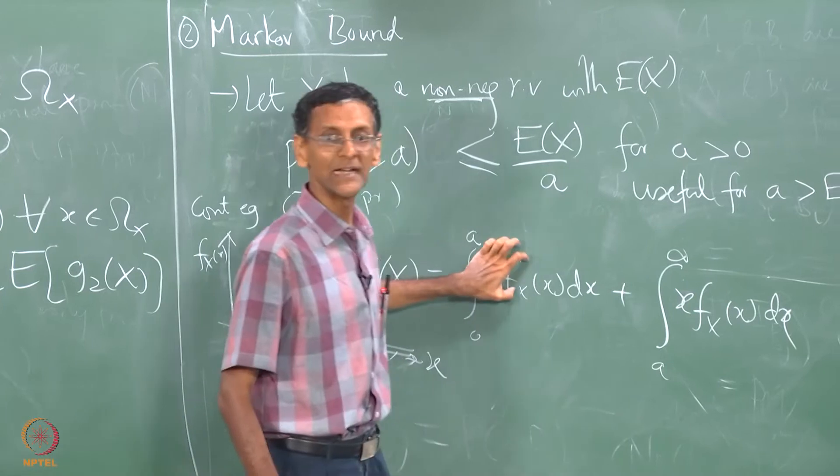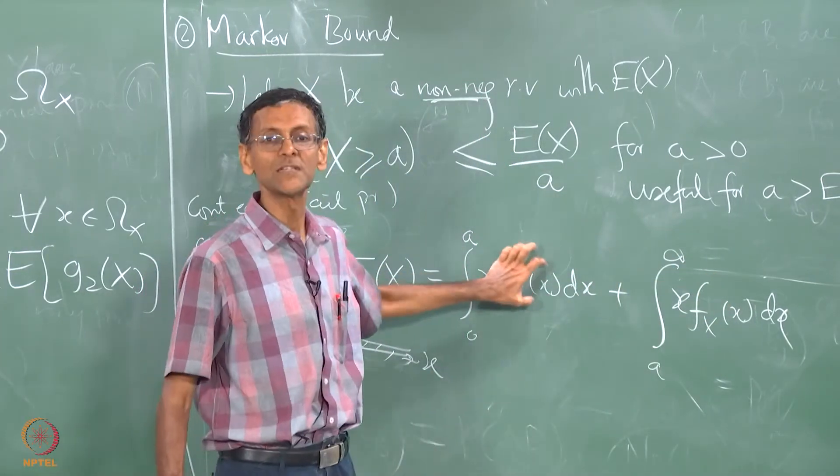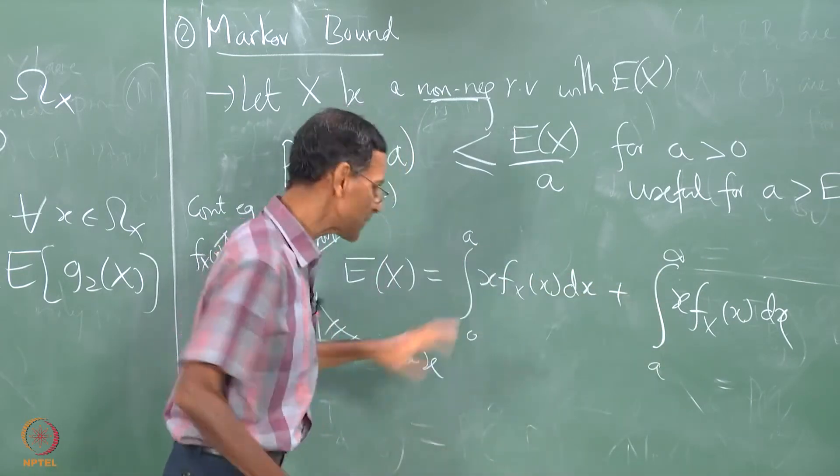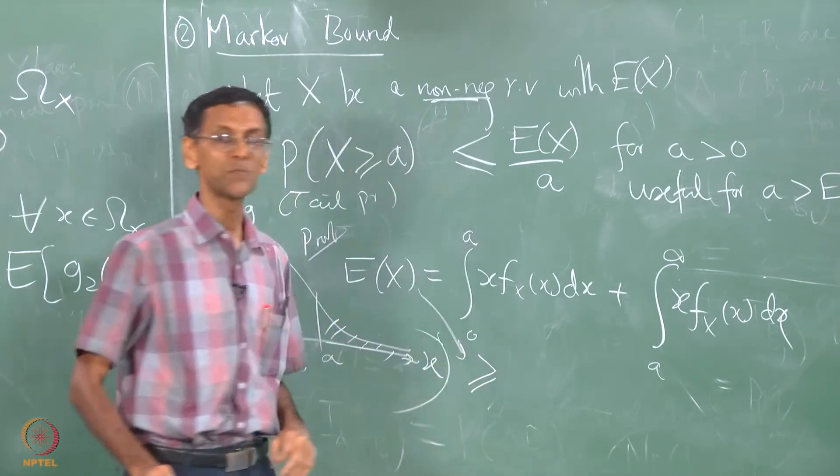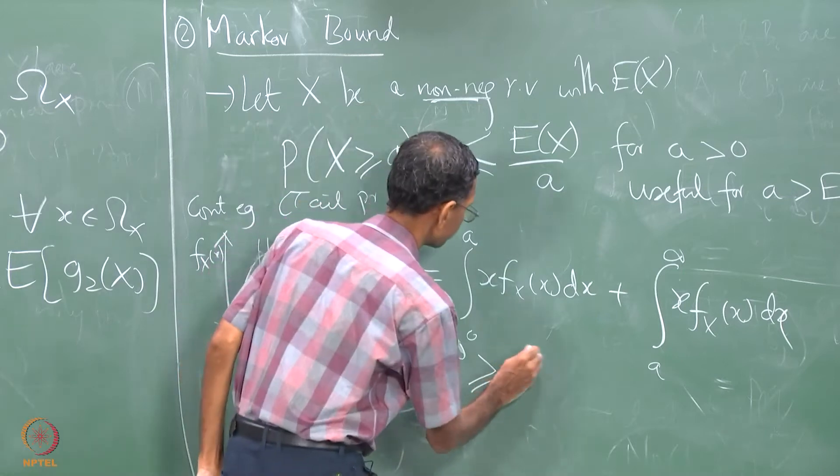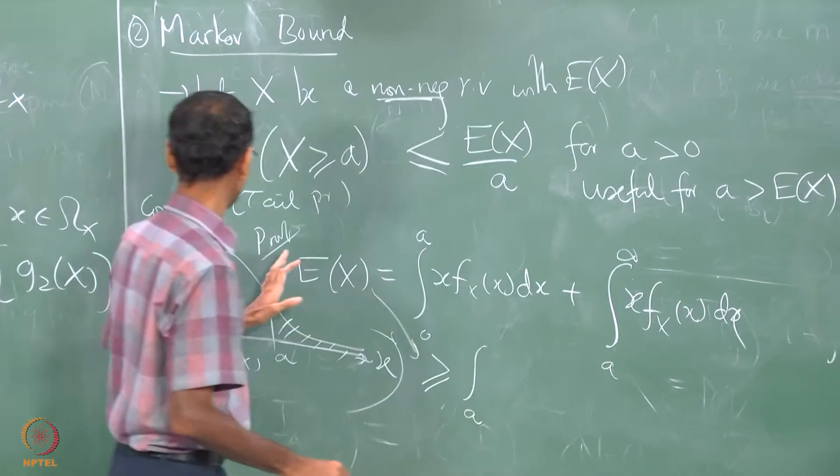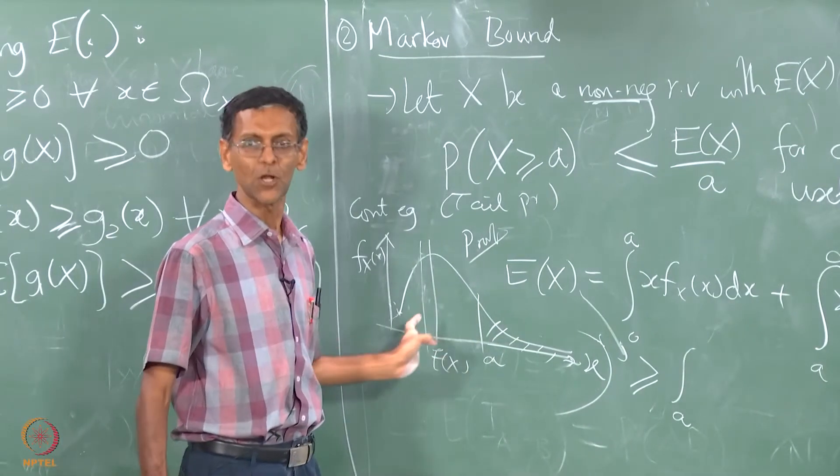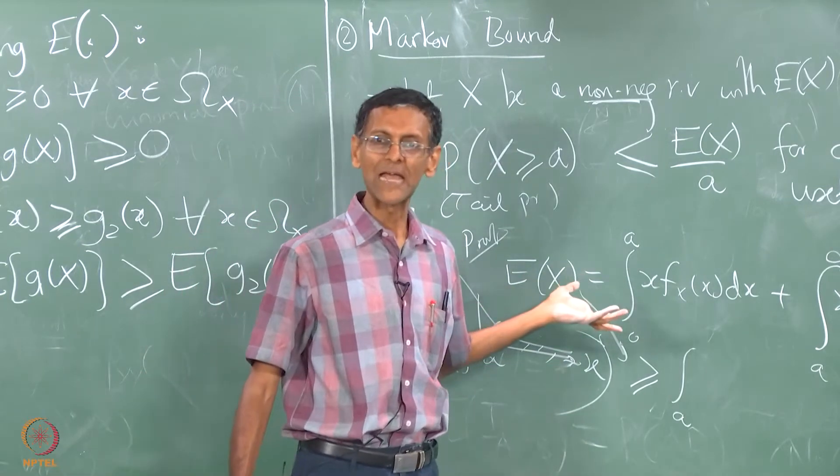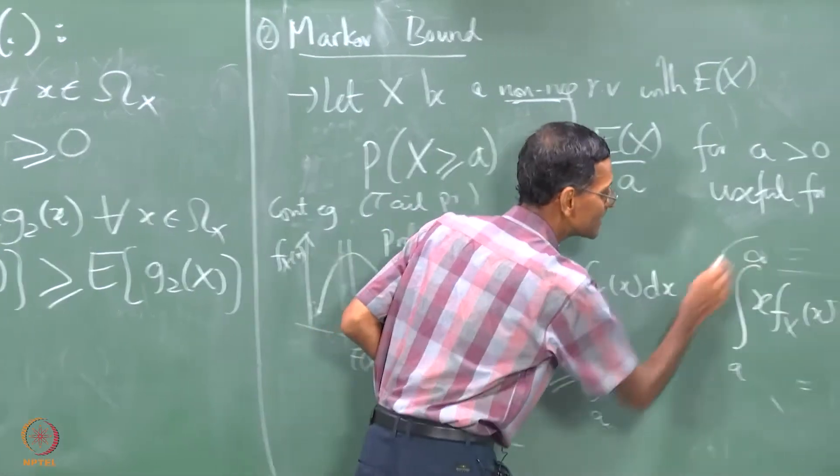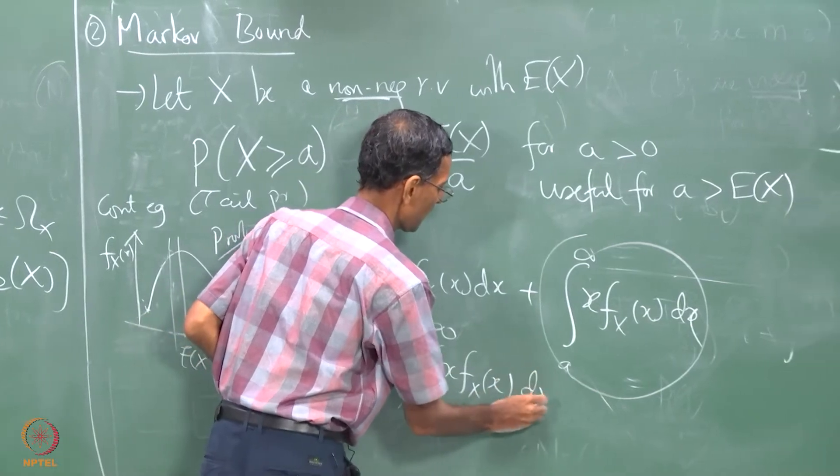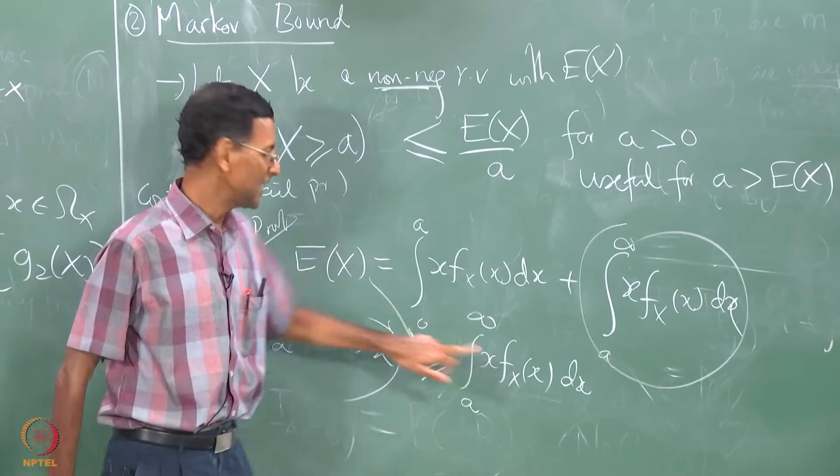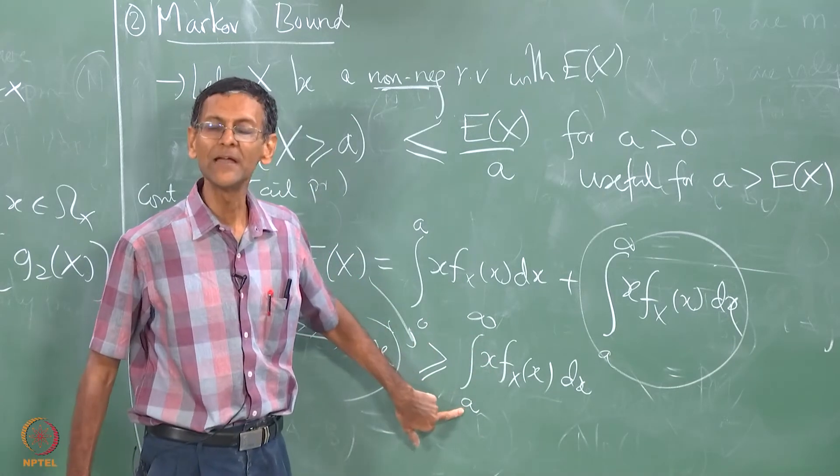In other words if I have some pdf like this, does not matter Rayleigh or whatever. This is true by the way irrespective of whether x is continuous or discrete. But I am just looking at the continuous example here. This is f x and this is x. So supposing e x is some number here and I pick an a out here and I am interested in this probability. This is the probability I want to bound using this. So it turns out that the proof is one version of the proof is to write this, split this integral for e x into 2 different parts. The integral which goes from 0 to infinity I will split into 2 parts, which 2 parts 0 to a and a to infinity.